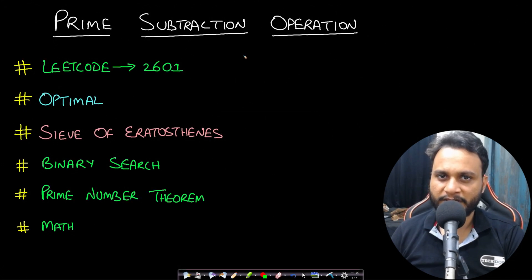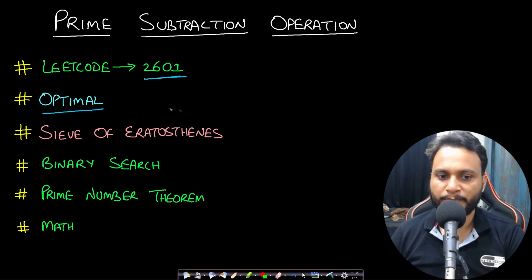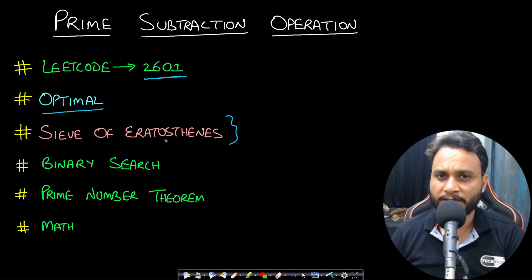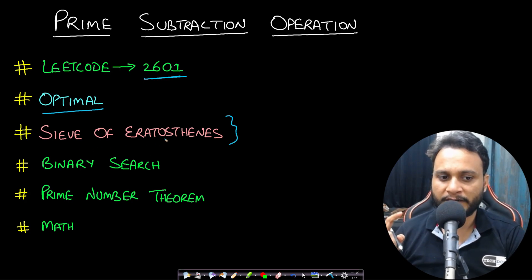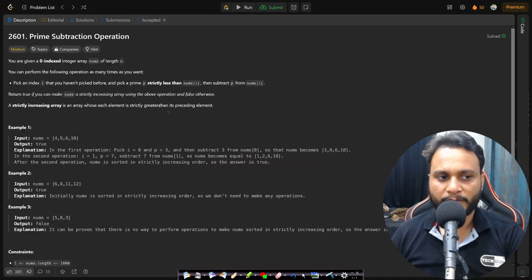Hello guys, welcome back to TakeDose. In this video we will look at the Prime Subtraction Operation problem, which is LeetCode number 2601. We will be looking at the optimal solution. A prerequisite before watching this is to watch my video on Sieve of Eratosthenes — you can click on the i button or find the link in the description below. Now let's read the problem statement.